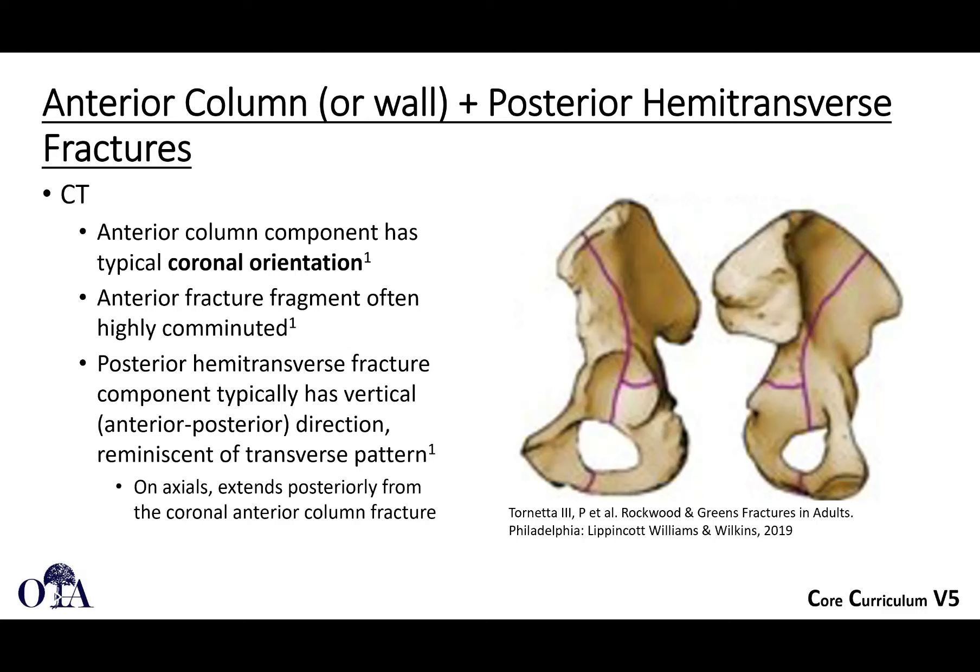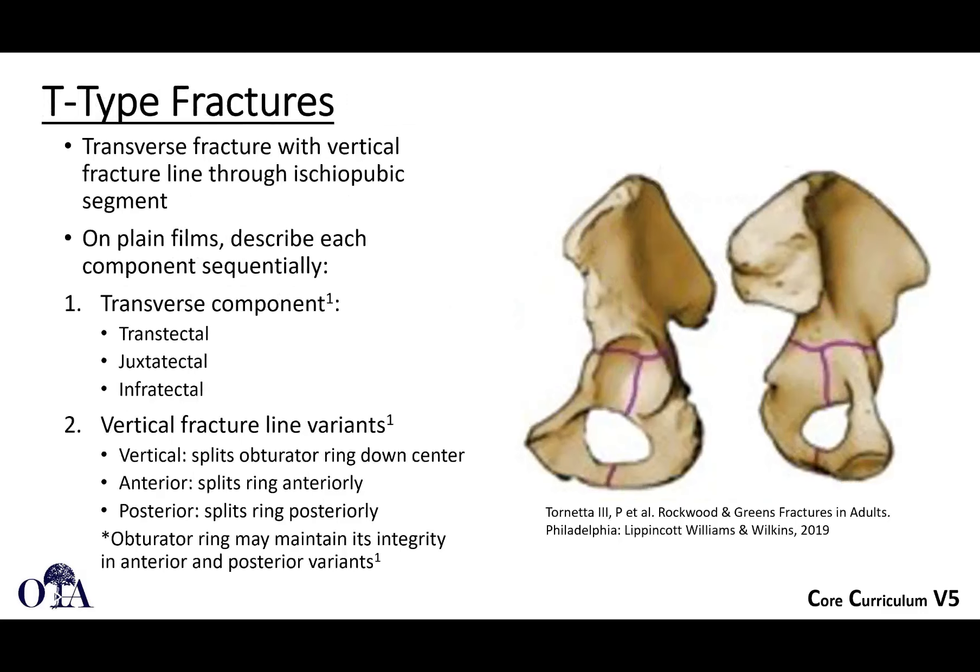On CT scan, the anterior column has that typical coronal orientation and is often somewhat comminuted. The posterior hemitransverse pattern on the axials extends posteriorly from the coronal anterior column fracture. Frequently the anterior column is more disrupted and displaced than the posterior column.